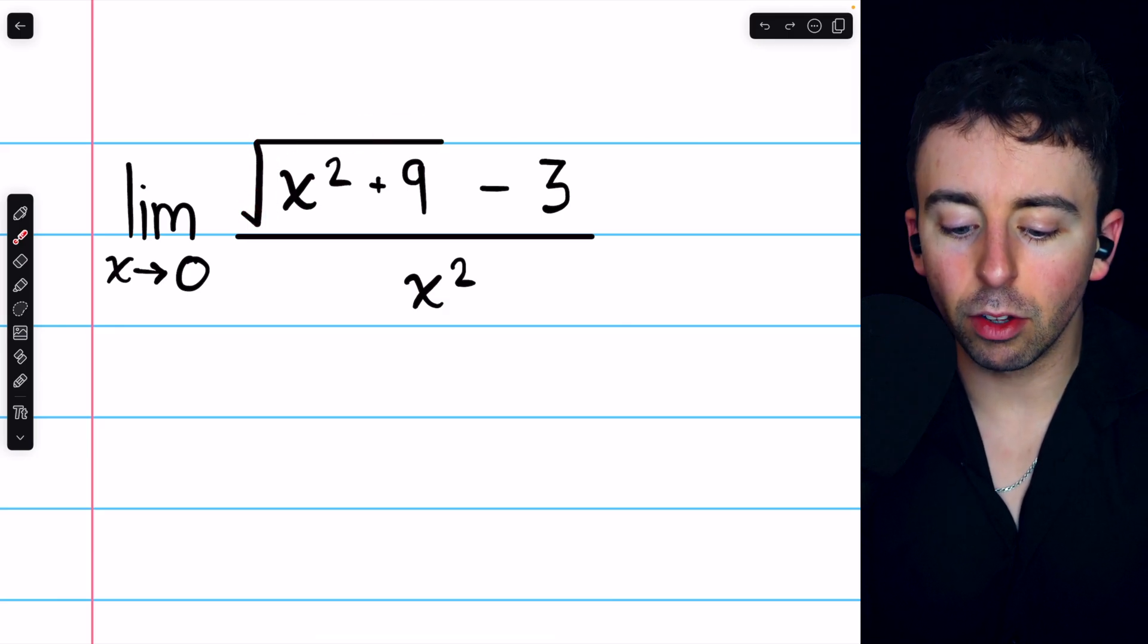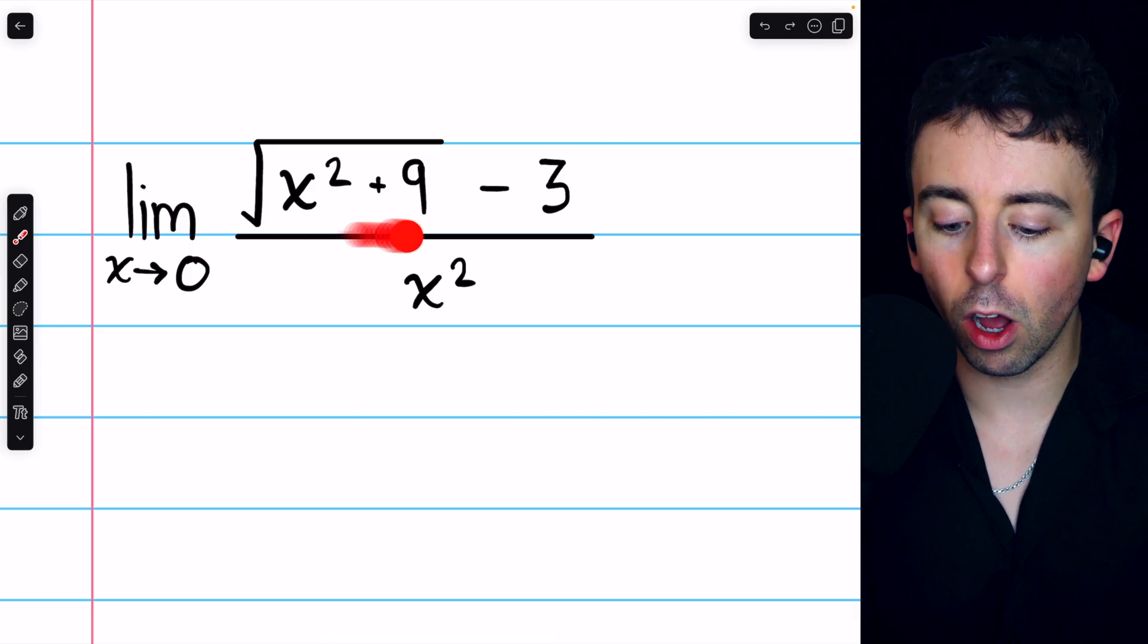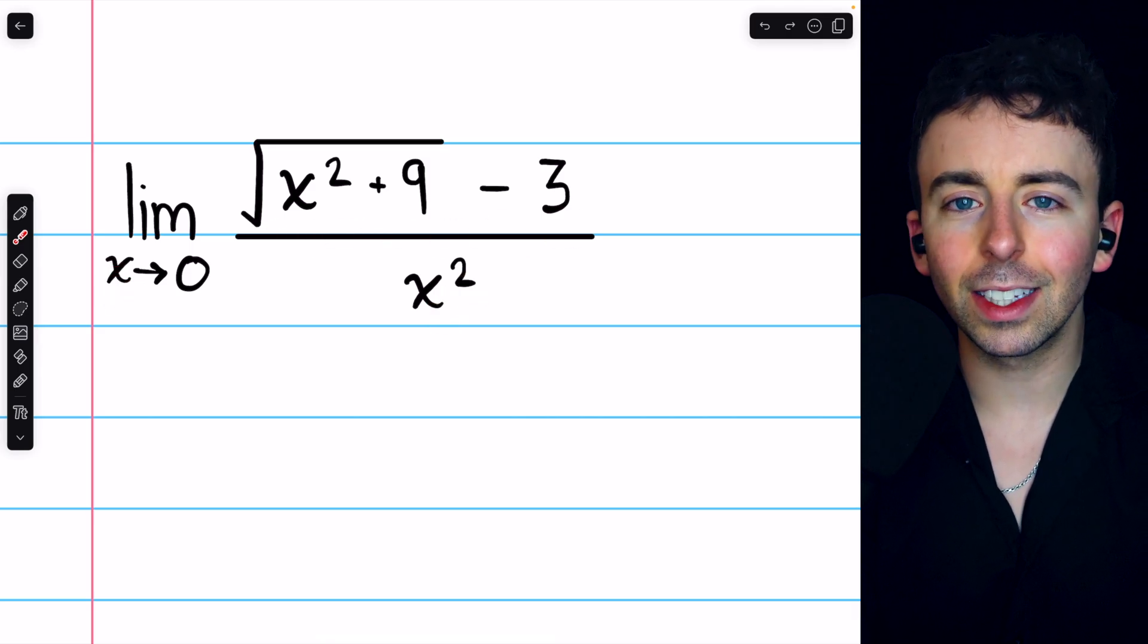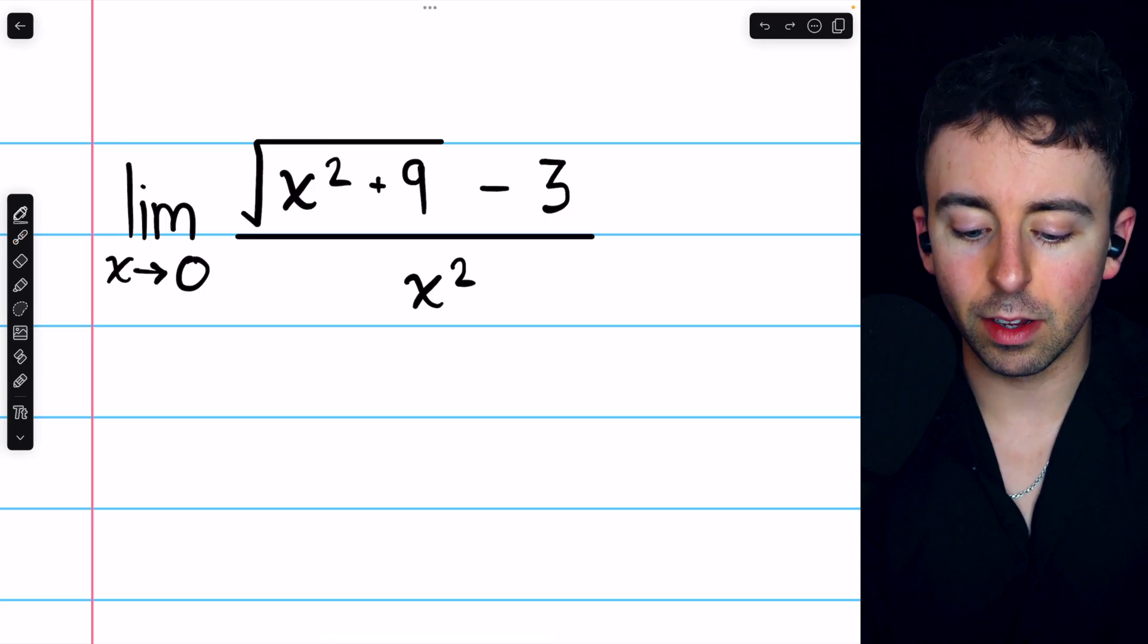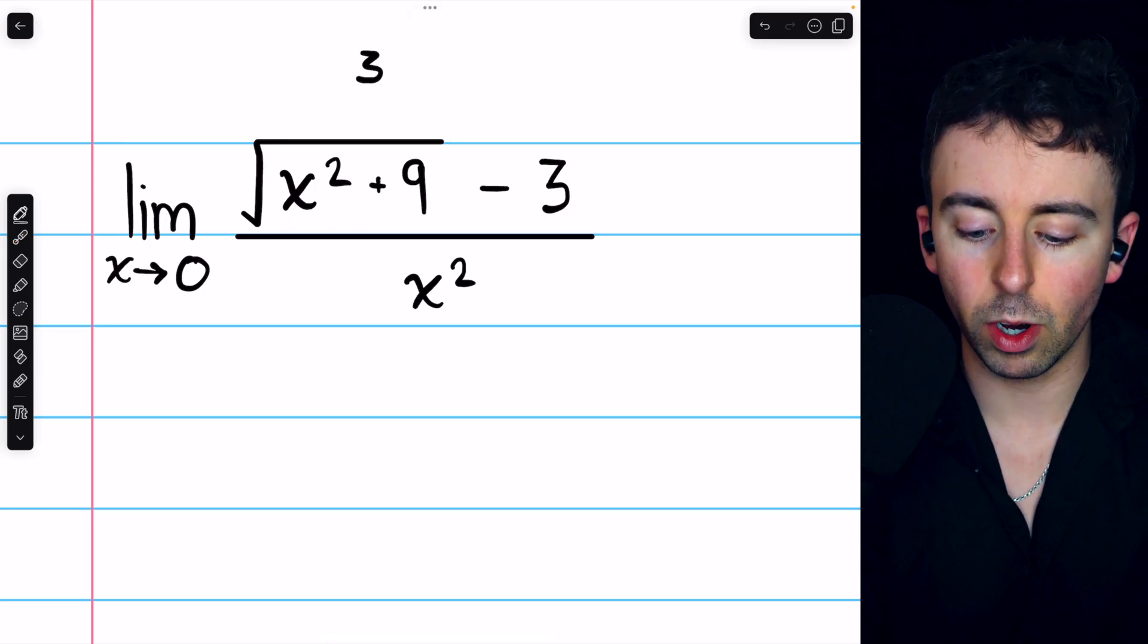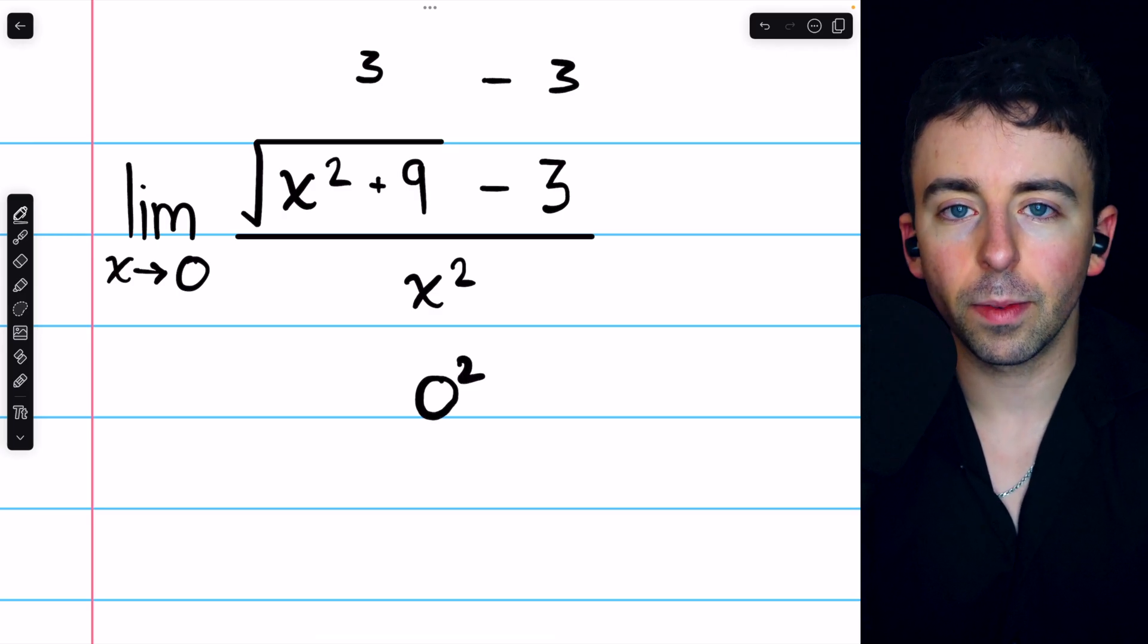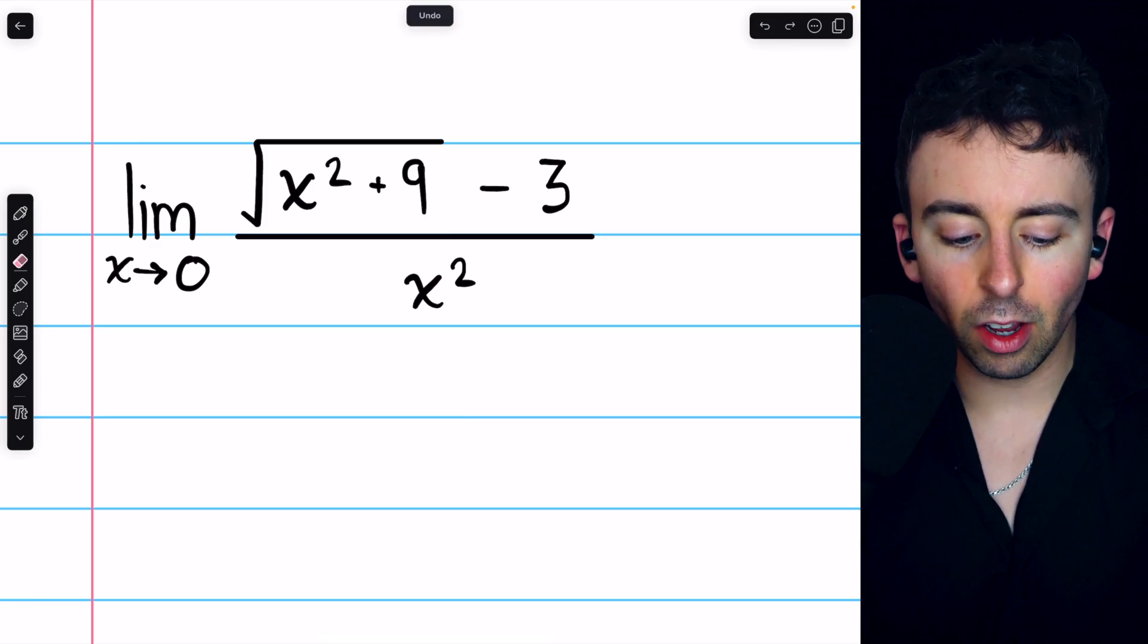We can't evaluate the limit of the square root of x squared plus 9 minus 3 all over x squared as x approaches 0 directly by substitution. Because if we try to do that, we're going to have the square root of 9, which is 3, minus 3, all divided by 0 squared. So that would just be 0 over 0, and that is indeterminate. So we'll have